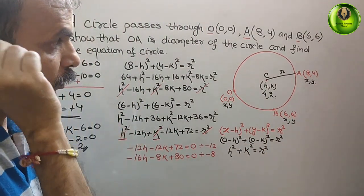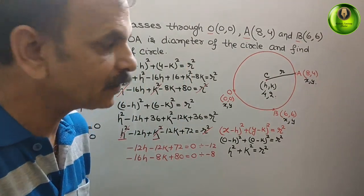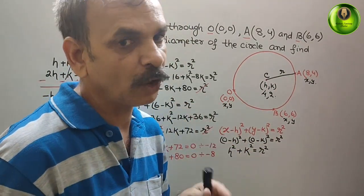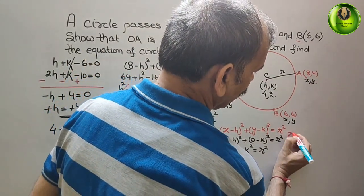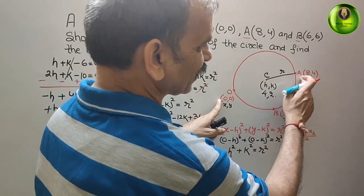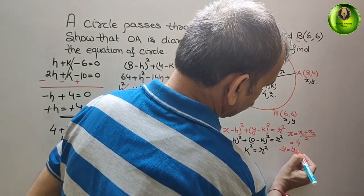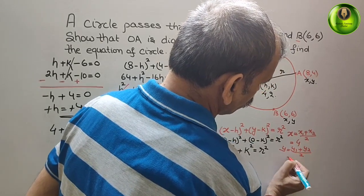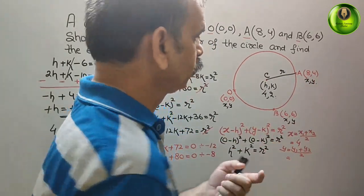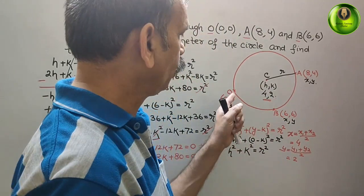Now we have to show that OA is a diameter. That means OA's midpoint should equal the center. Using the midpoint formula: X = (0 + 8)/2 = 4, and Y = (0 + 4)/2 = 2. So the midpoint is (4, 2) — the same as the center. Therefore, OA is the diameter.